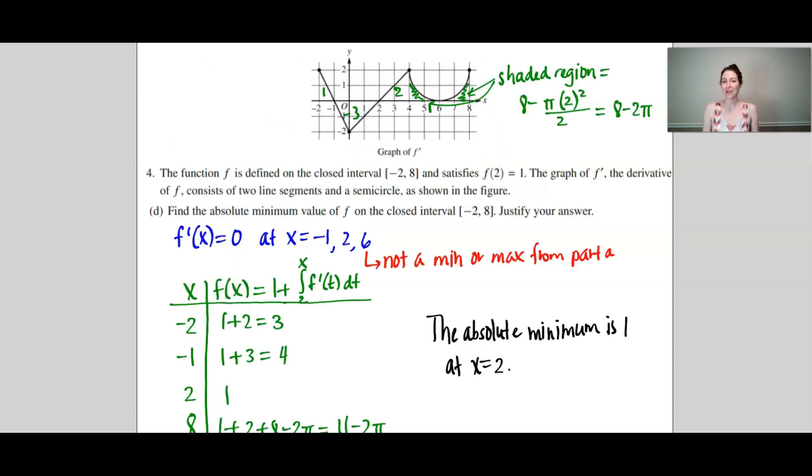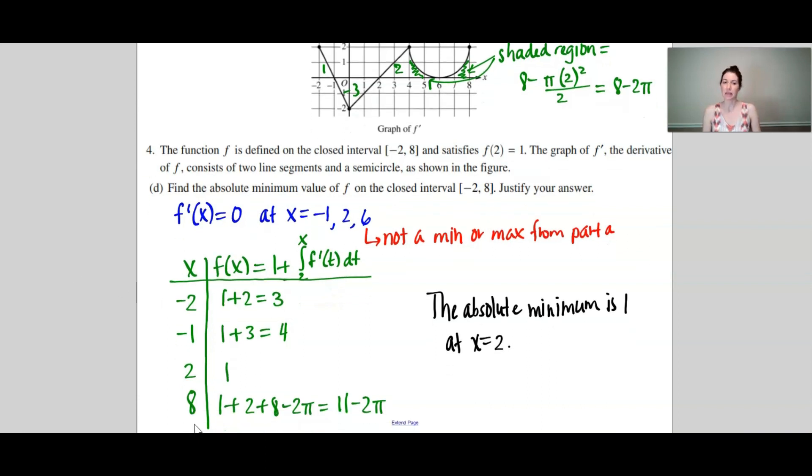Now on to the final part d. We are asked to find the absolute minimum value of f. This is your standard candidates test. To find the candidates, we're going to test critical points and endpoints. That's where absolute extrema occur, only at endpoints or critical points. So we are given the endpoints of negative 2 and 8, so I made sure to include those in my table. And then I also need to find my critical points. Critical points are where the derivative equals 0. I can see from my graph that f prime equals 0 at negative 1, 2, and at 6. But we've already determined in part a that 6 cannot be a relative min or relative max, and therefore it cannot be an absolute minimum. So I'm not going to include that on my table.